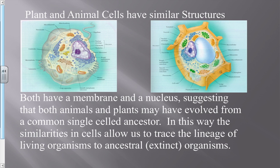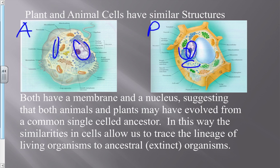Looking at plant and animal cells side by side: the animal cell is on the left, plant cell on the right. Just eyeballing it, there are lots of things in common — the nucleus, rough endoplasmic reticulum, smooth endoplasmic reticulum, Golgi apparatus, mitochondria, cytoplasm filling the cell, and the cell membrane. They have far more in common than they have different. All the differences have to do with their mode of nutrition — how they get their energy.